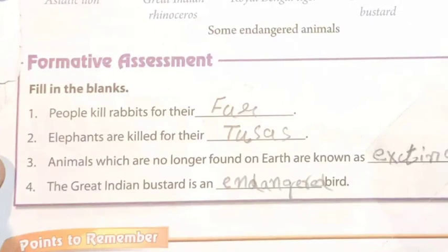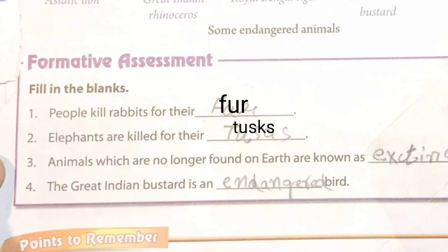Formative assessment — fill in the blanks. 1. People kill rabbits for their fur. 2. Elephants are killed for their tusks. 3. Animals which are no longer found on earth are known as extinct animals. 4. The Great Indian Bustard is an endangered bird.